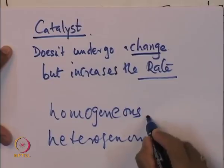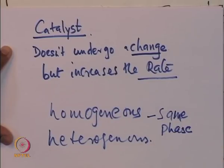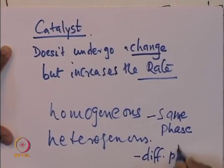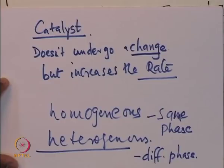If the catalyst is in the same phase as the reaction mixture, it is homogeneous. If it is in a different phase, it is heterogeneous. For example, if you have a solid catalyst catalyzing a reaction of reactants in gas or liquid phase — say ion exchange resin for esterification (liquid phase), or fluid catalytic cracking where zeolites are used for catalyzing hydrocarbon cracking (gas phase) — these are heterogeneous reactions, which are quite common in the chemical industry.